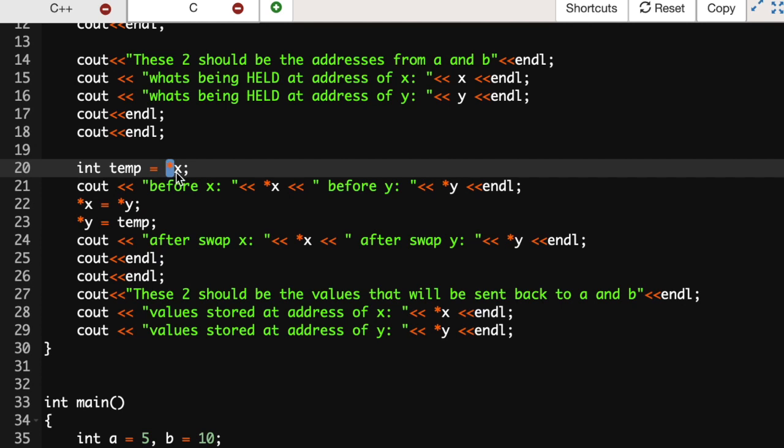We have a temporary variable to point to what x is pointing to. I know this sounds like a lot of pointing and this is going to that, but basically temp is equal to what x is, and then you set x equal to what y is, so you don't get rid of what x was originally pointing to.